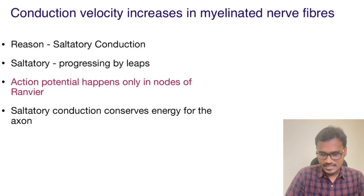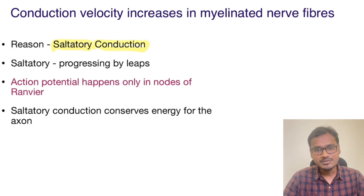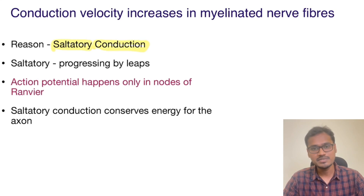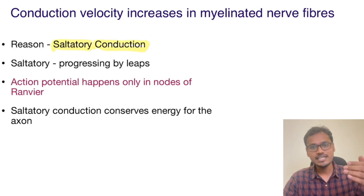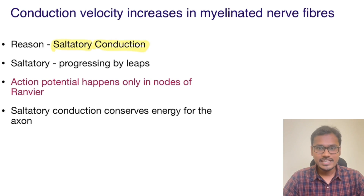What is the term saltatory? The term saltatory in English means progression by leaps. It is not step by step — it is like taking bigger leaps. They have named it very nicely. Let's understand how this saltatory conduction is happening in myelinated nerve fibers.